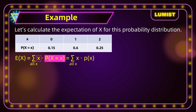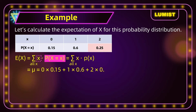So mu, which is another way of writing expectation of x, is going to be equal to: starting with x = 0, multiplied by its corresponding probability 0.15, plus 1 multiplied by its corresponding probability 0.6, plus 2 multiplied by its corresponding probability 0.25. When we calculate this, we get 1.1.